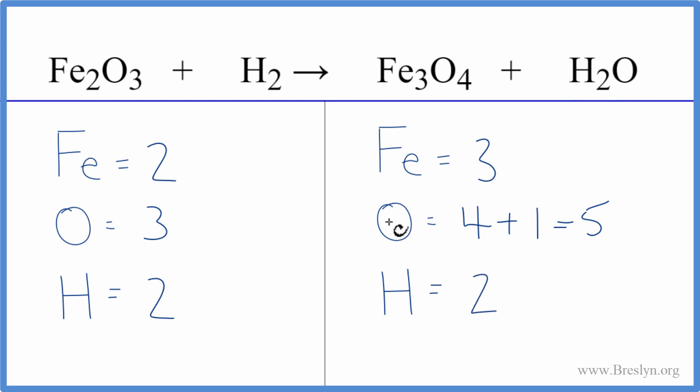So when I have odd numbers here, it's helpful to try to get them to be even. So with this three here, I think I'm just going to multiply the Fe3O4 by a coefficient of two.